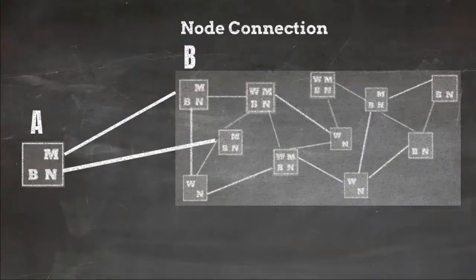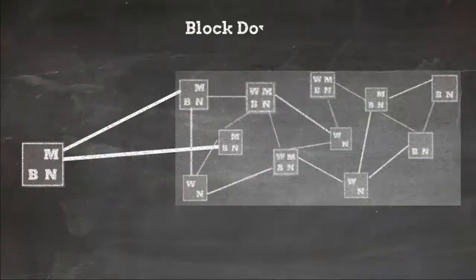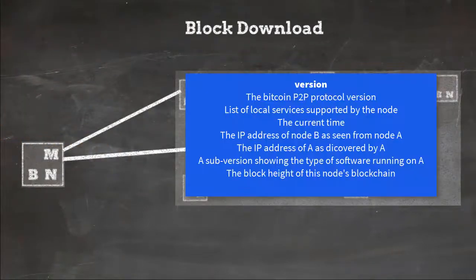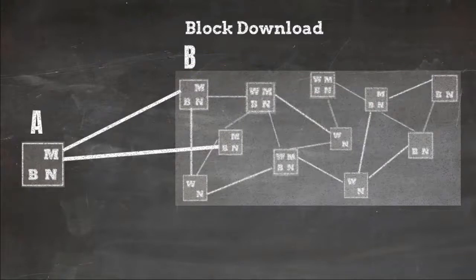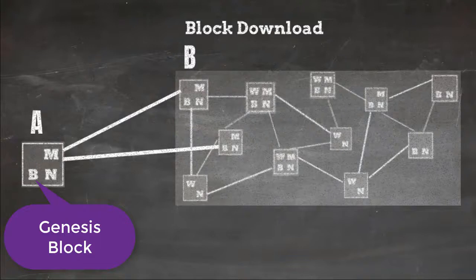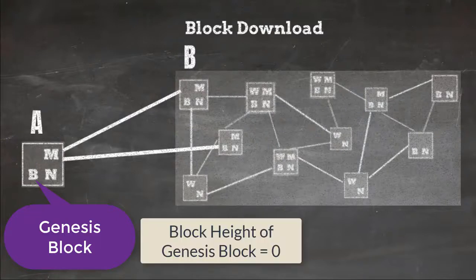So now that the connection is made next step is to start downloading blocks. The version message that node A has sent would also contain best height which is current blockchain height. Let's say that node A is a new node so it has no blocks but it will have genesis block anyway because genesis block is embedded in the client software. You know that block height of genesis block is considered to be zero.